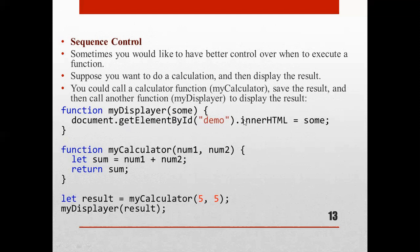We are including an HTML file and getting an element by id. We also have a function myCalculator with parameters number1 and number2. Inside that function, we calculate the sum: let sum = number1 + number2, and then return that sum, closing the body of myCalculator. We then save the result into a variable.